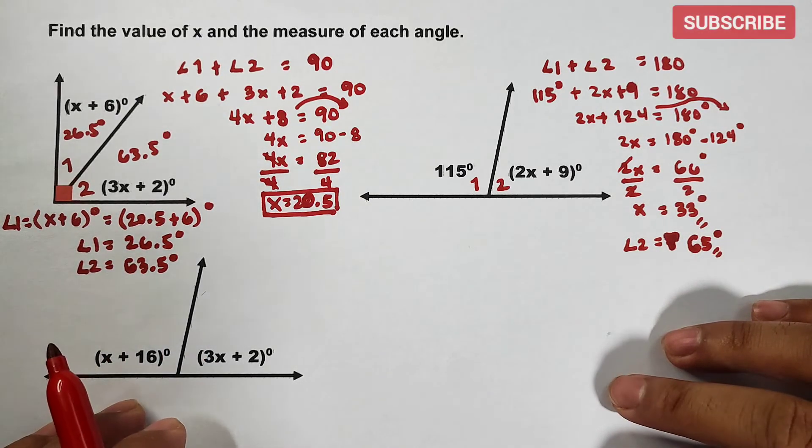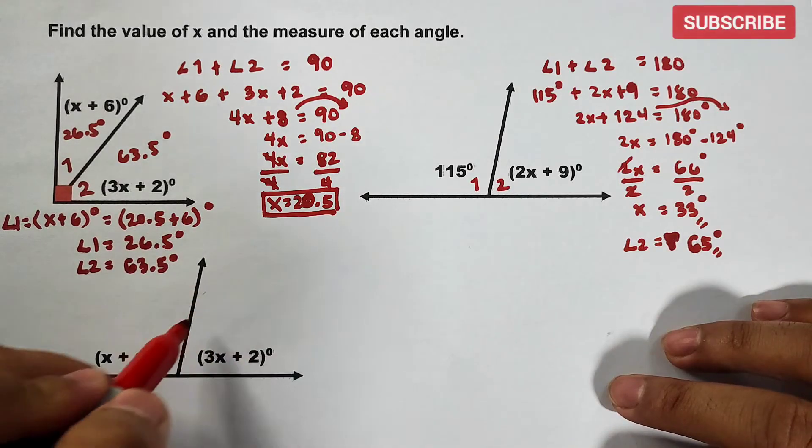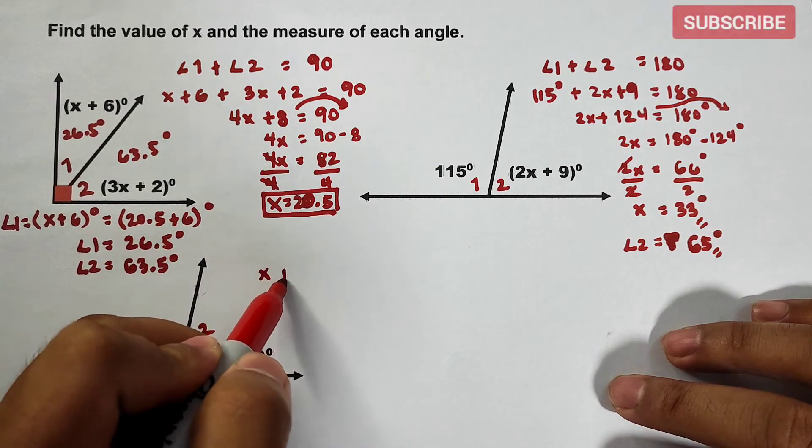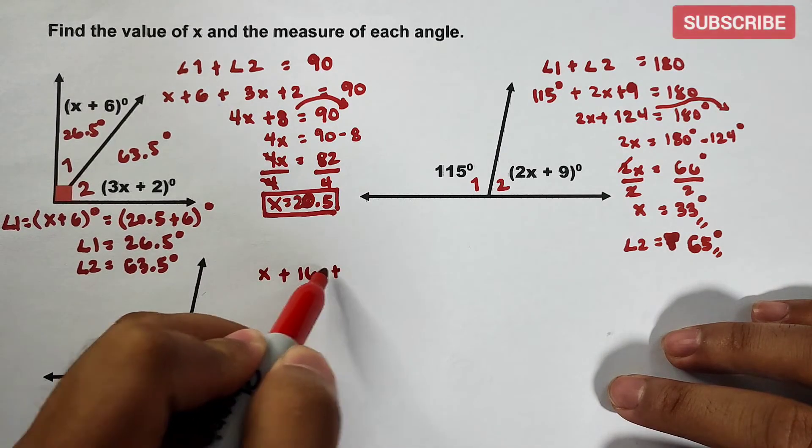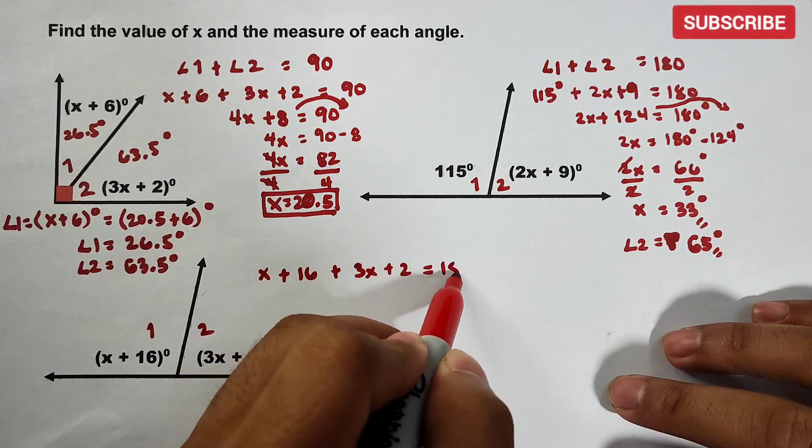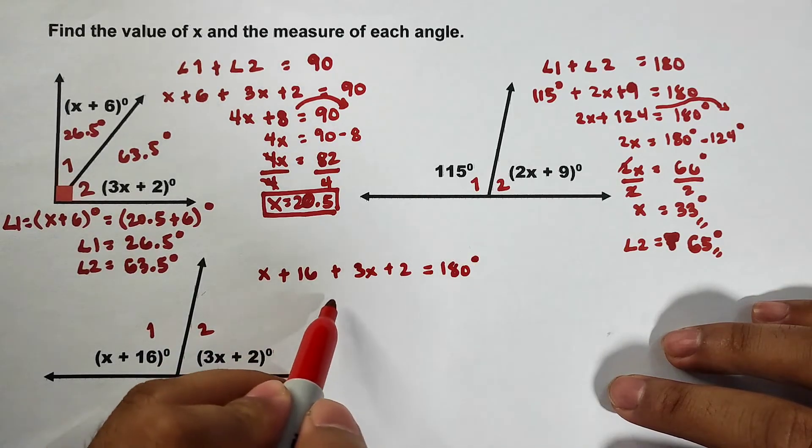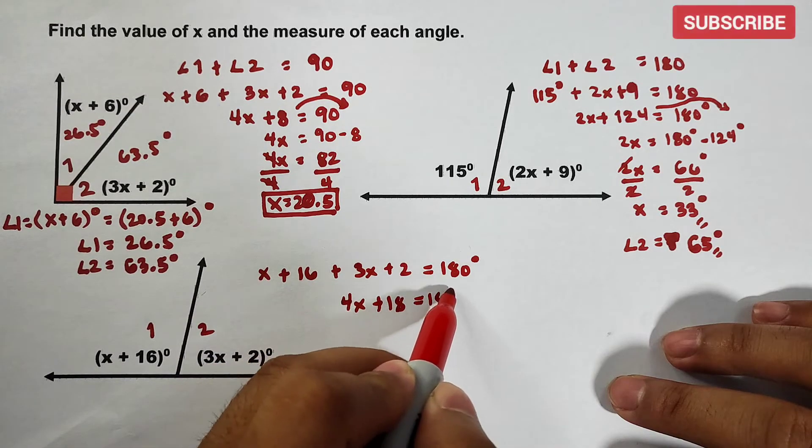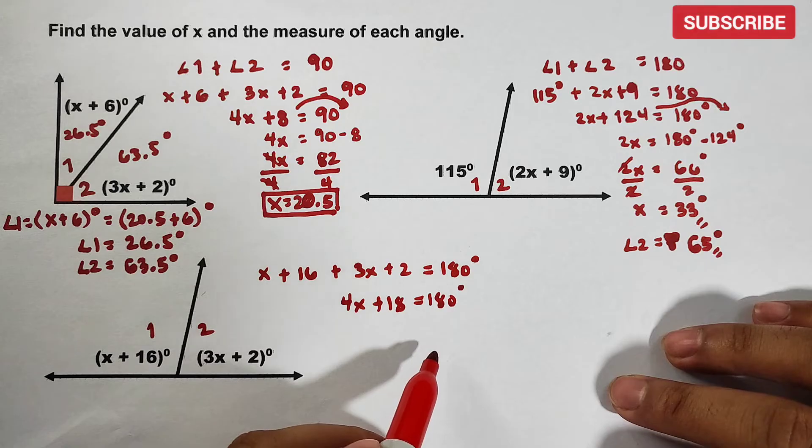Supplementary angles yung concept. So let's add them. This is angle 1, angle 2. x plus 16 plus 3x plus 2 is equal to 180 degrees. Add them, 4x plus 18 is equal to 180 degrees.